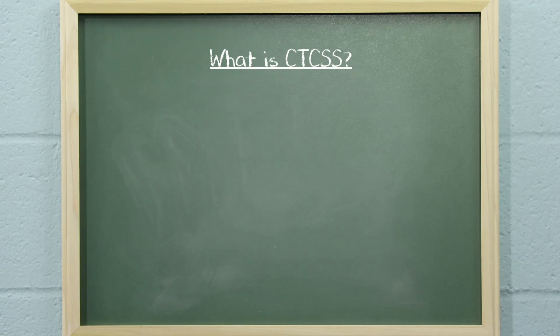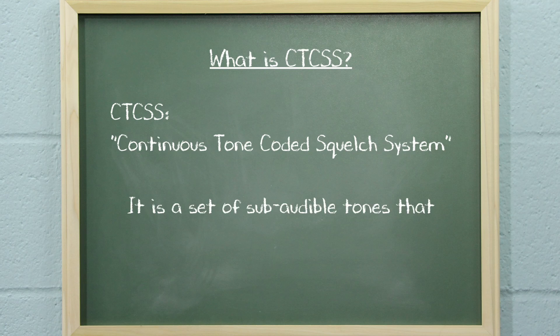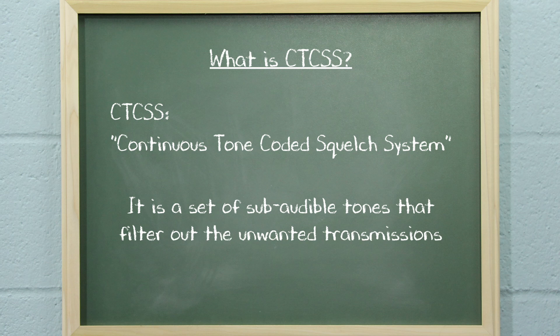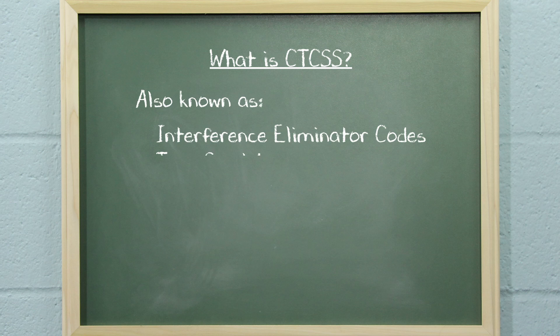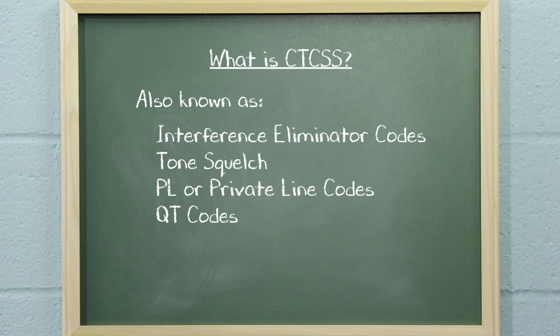So what is the difference between them? CTCSS is an acronym for Continuous Tone Coded Squelch System. It is a set of subaudible tones that filter out the unwanted transmissions. CTCSS tones are also known as Interference Eliminator Codes, Tone Squelch, PL or Private Line Codes, QT Codes, Channel Guard, or Subchannels.